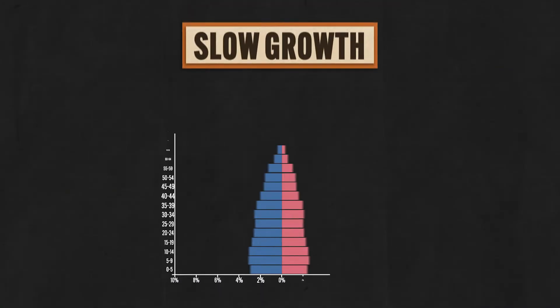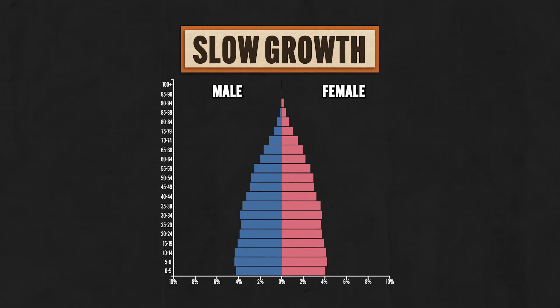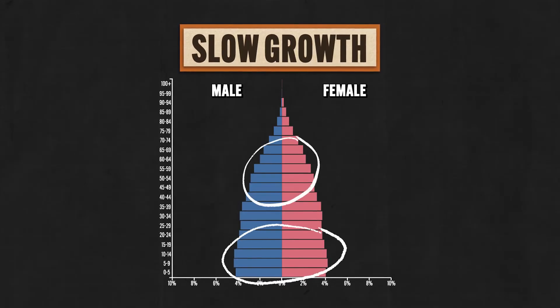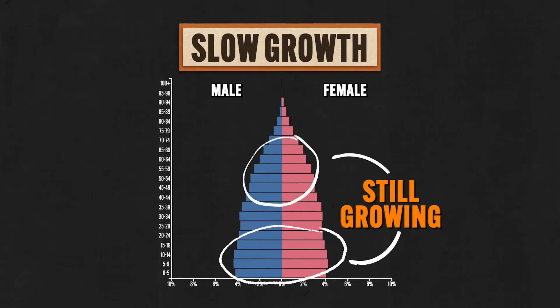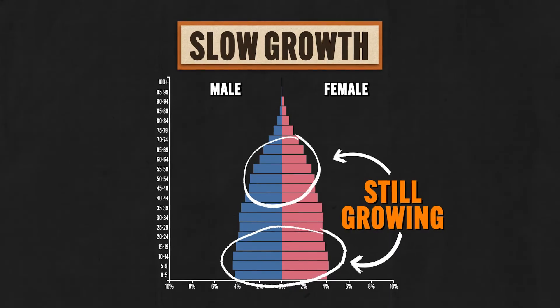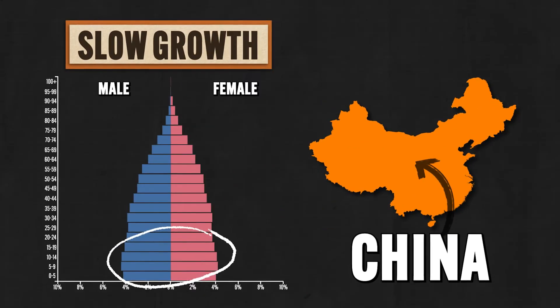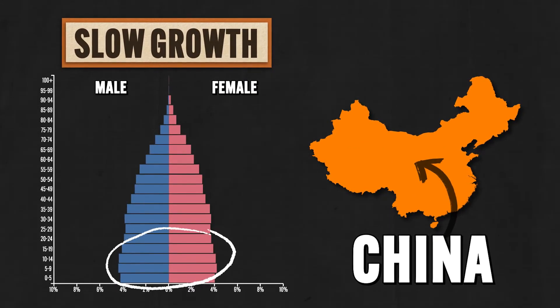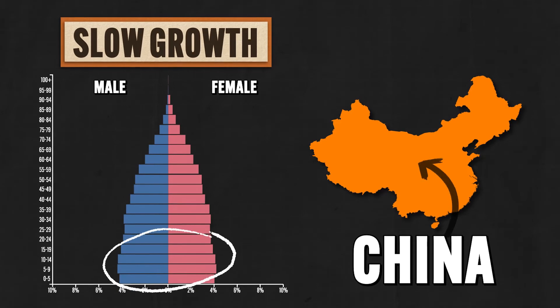But then there's the slow growth population. Here, the birth rate is slightly higher than the death rate, so the population is still growing, just not as rapidly. A good real-life example here is China, and that narrow base can be linked at least in part to the one-child policy mentioned earlier. As the population ages, countries like this are going to face challenges of providing health care for the elderly.